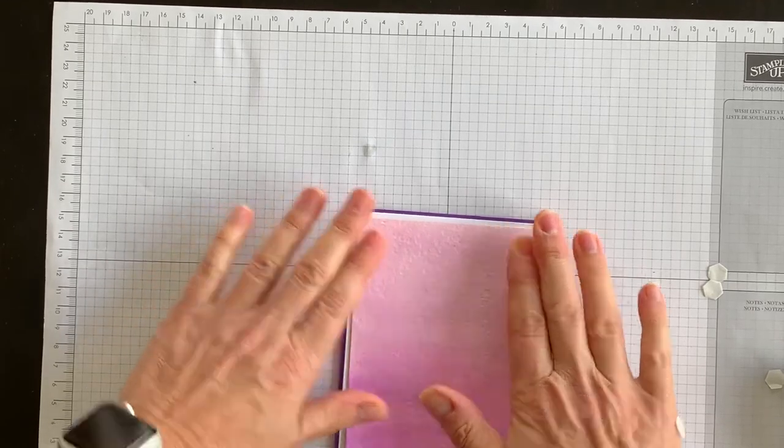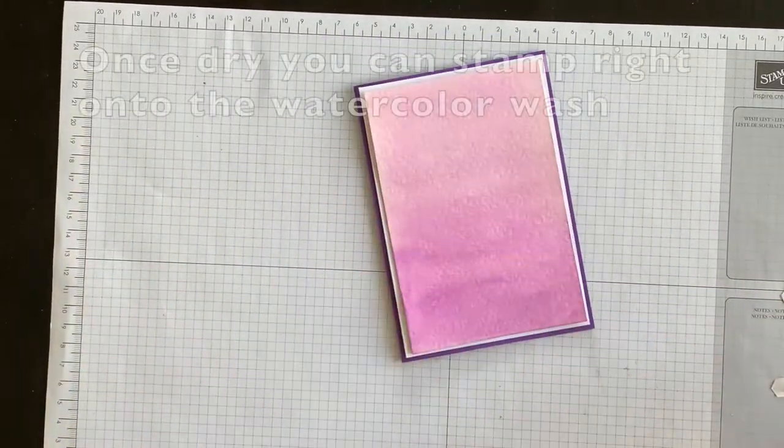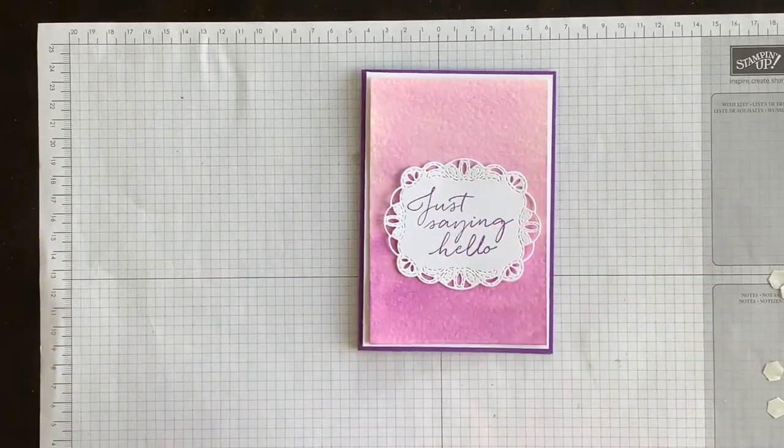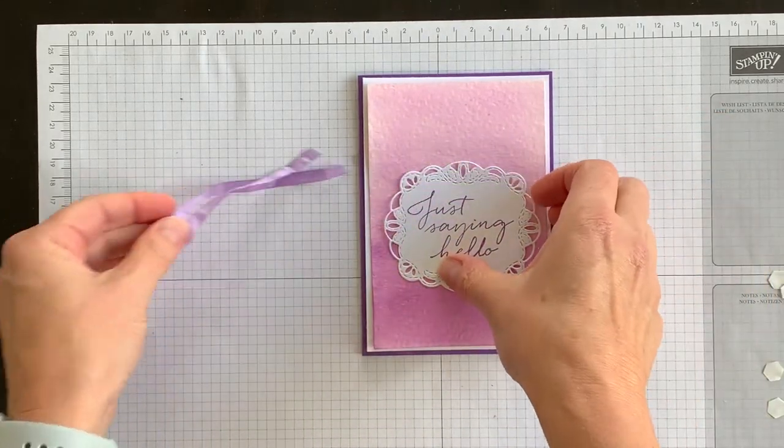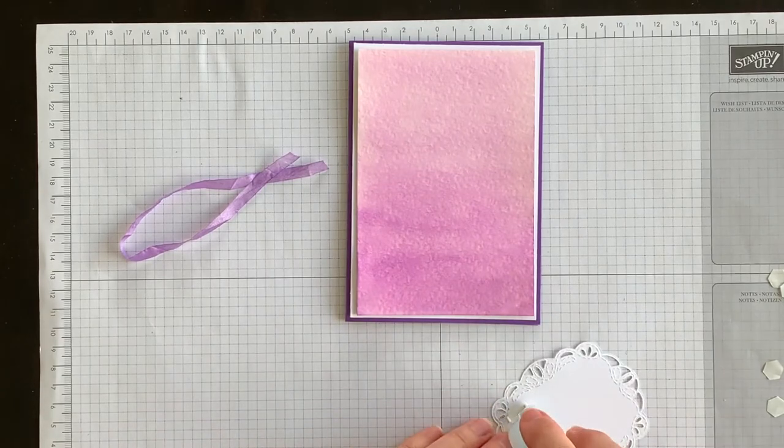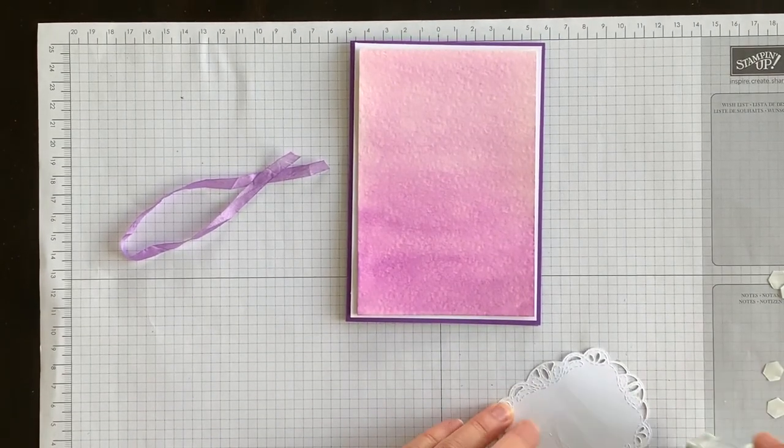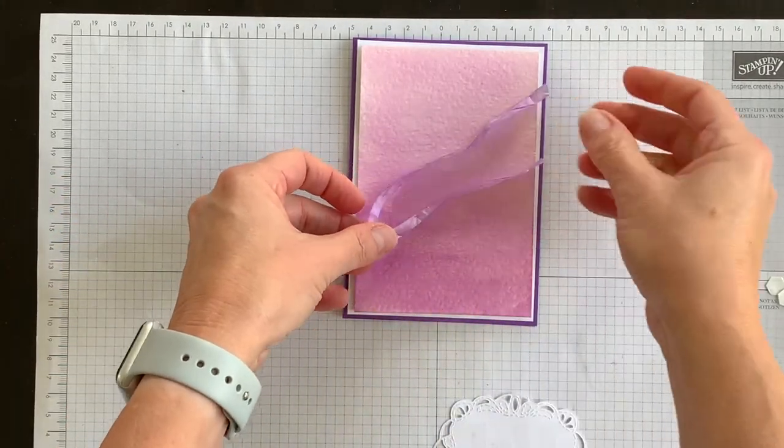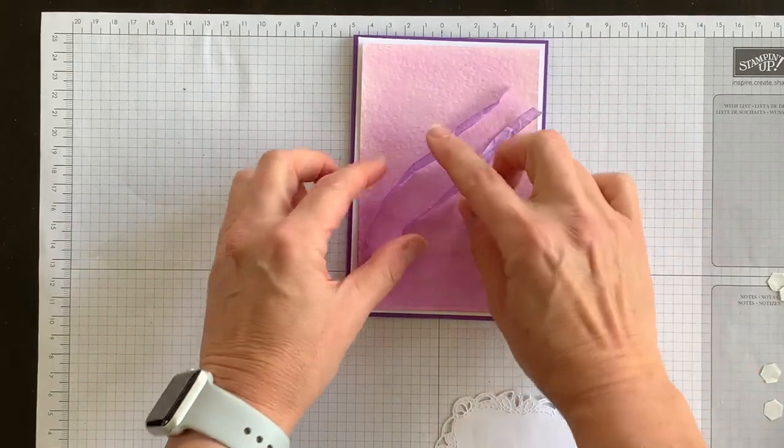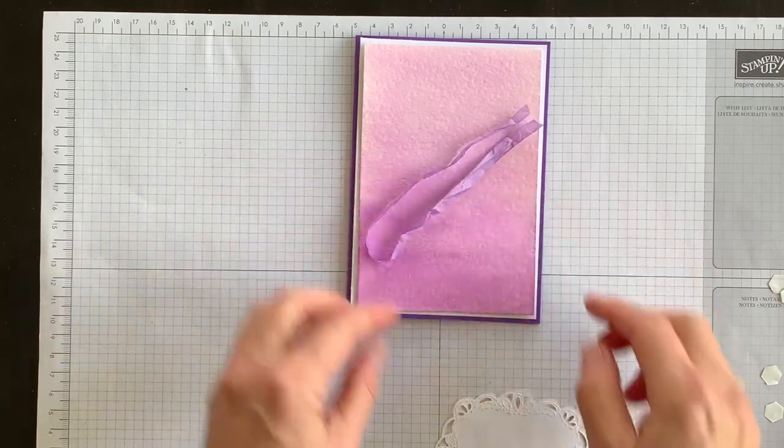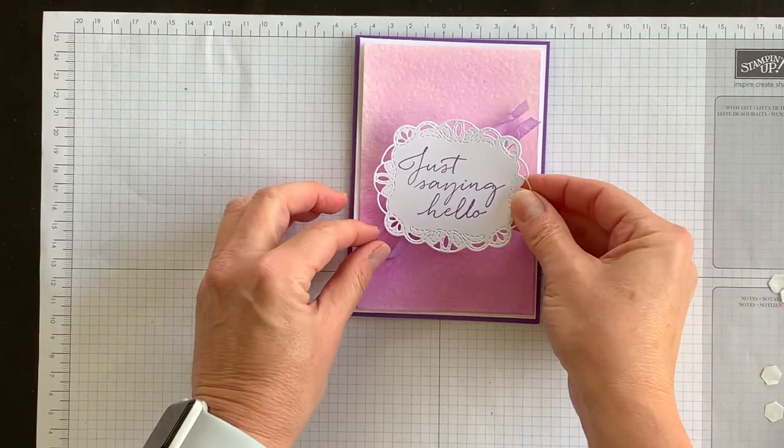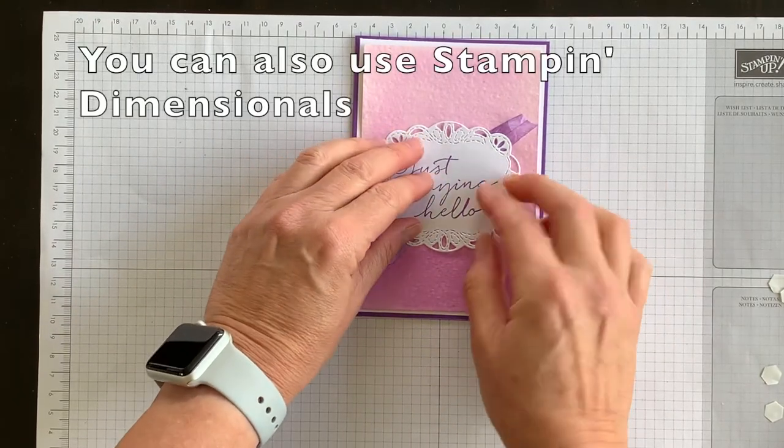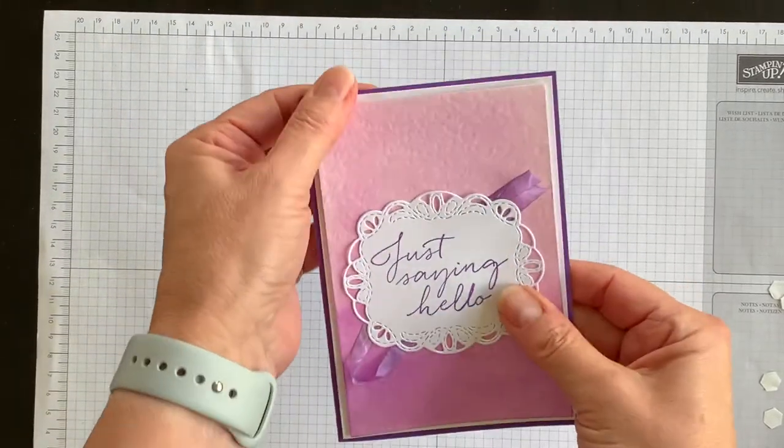And then I am going to bring in my phrase, and I remember I had my ribbon. So what I'm going to do is put some adhesive on the back of my phrase, and then I'm going to fold my ribbon in half and have it lay like so on the front of my card, and then I'm going to bring in my phrase and lay that down like so, and that will hold my ribbon in place.